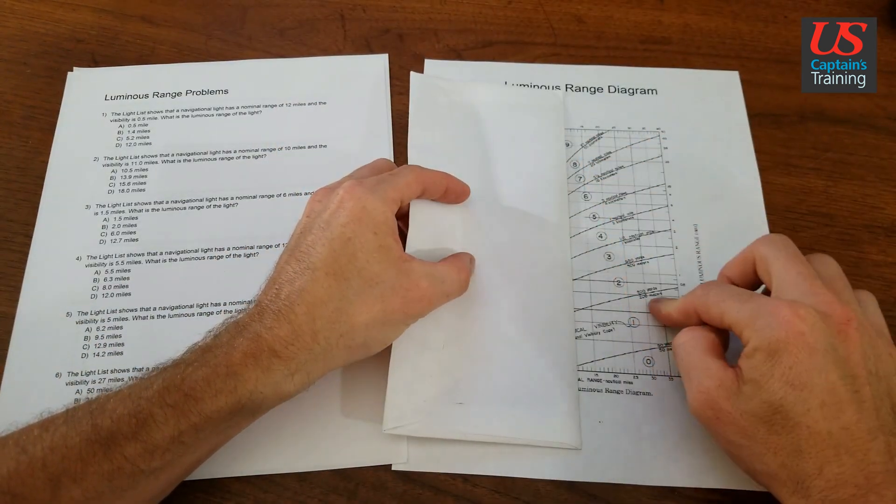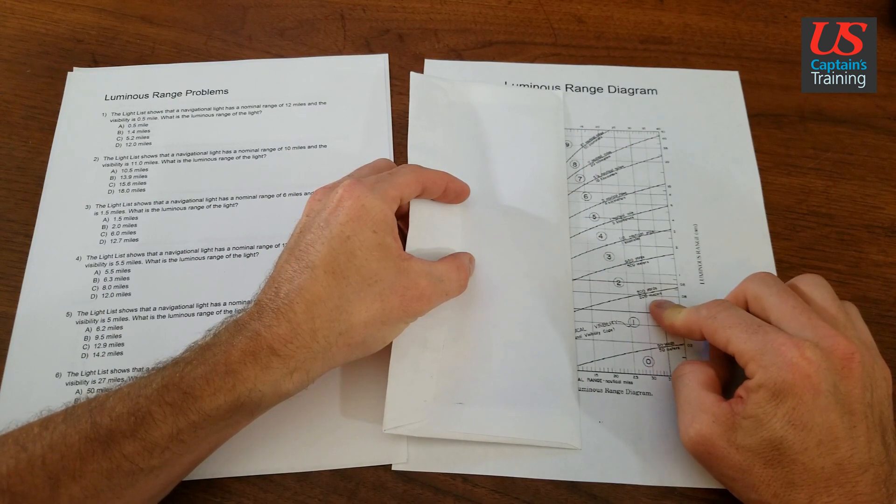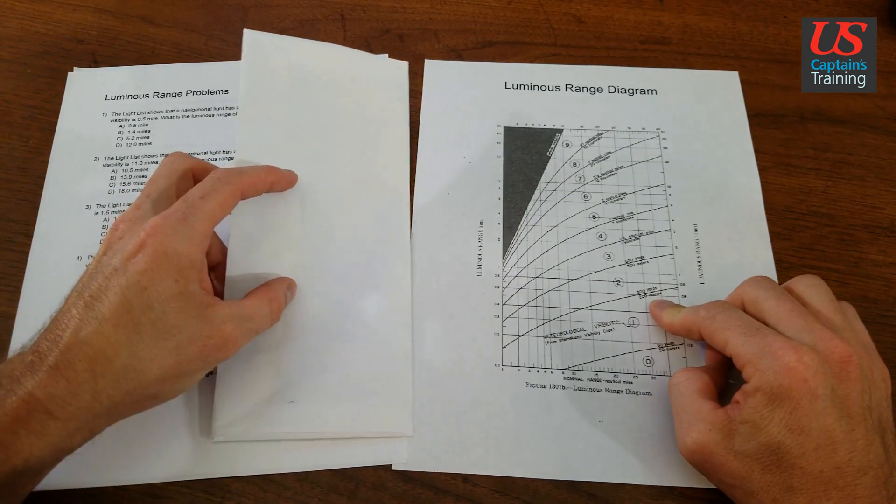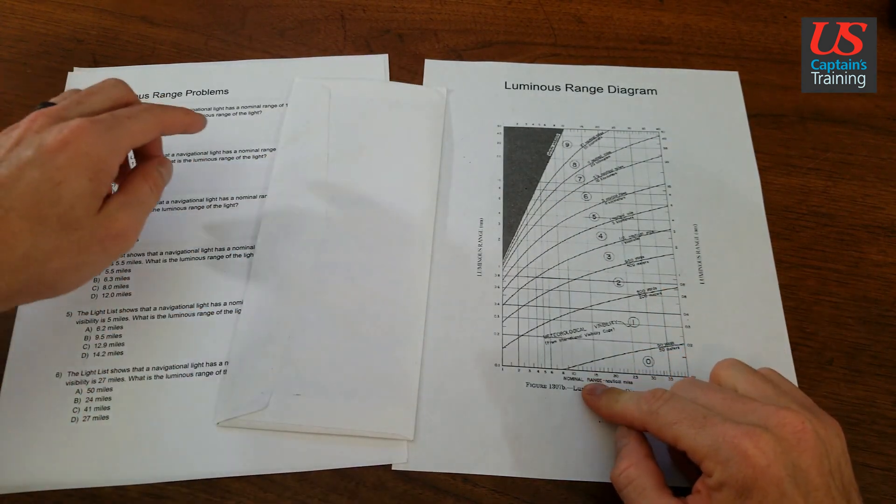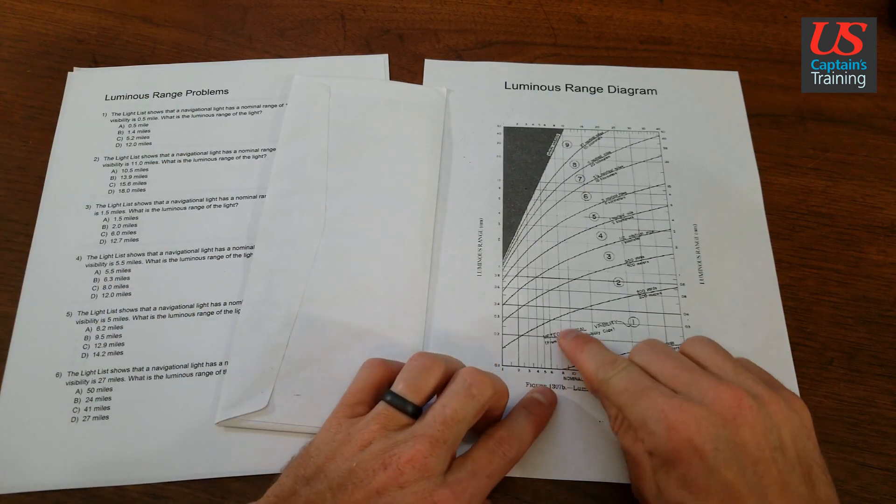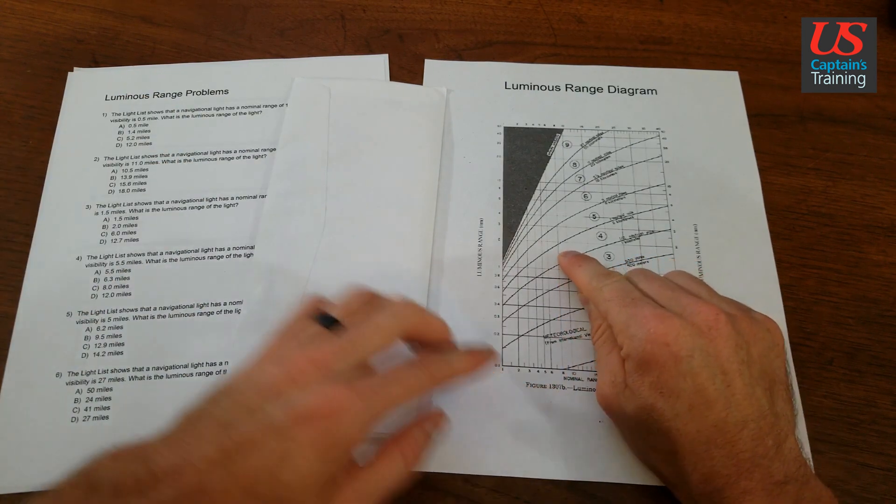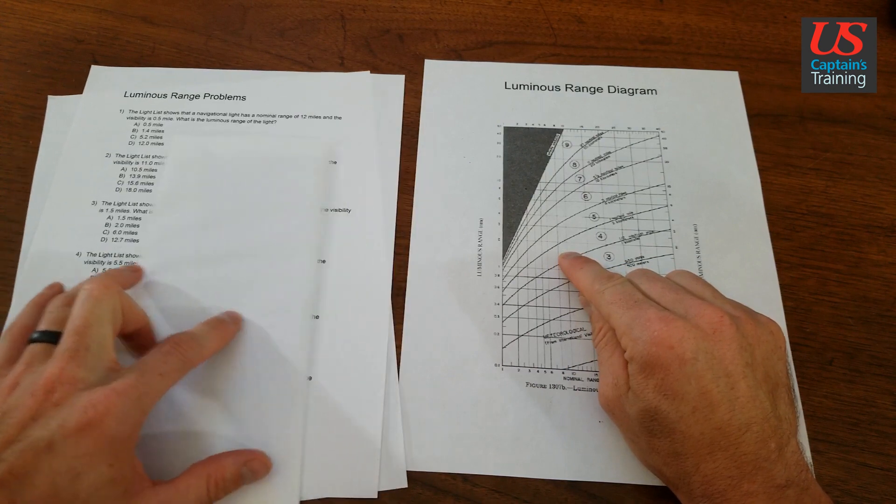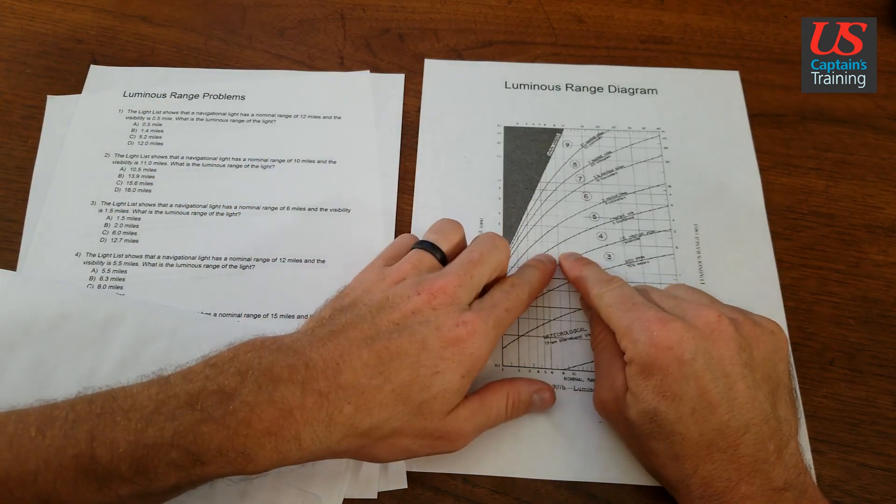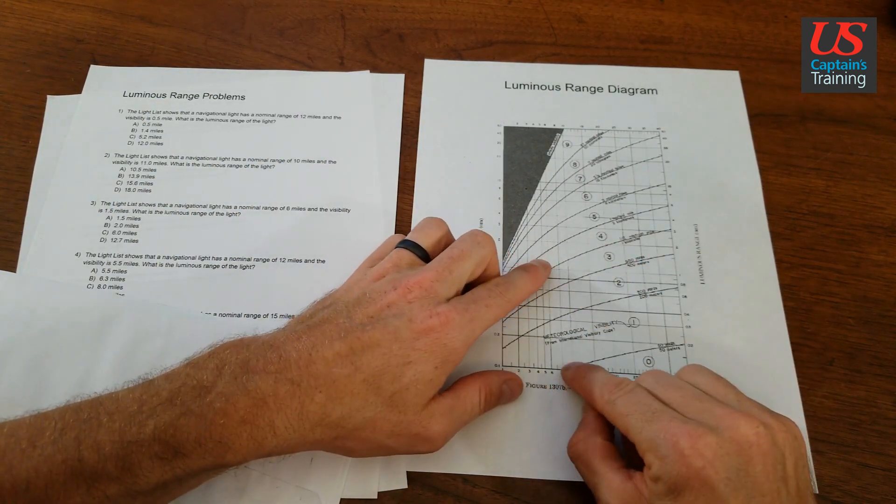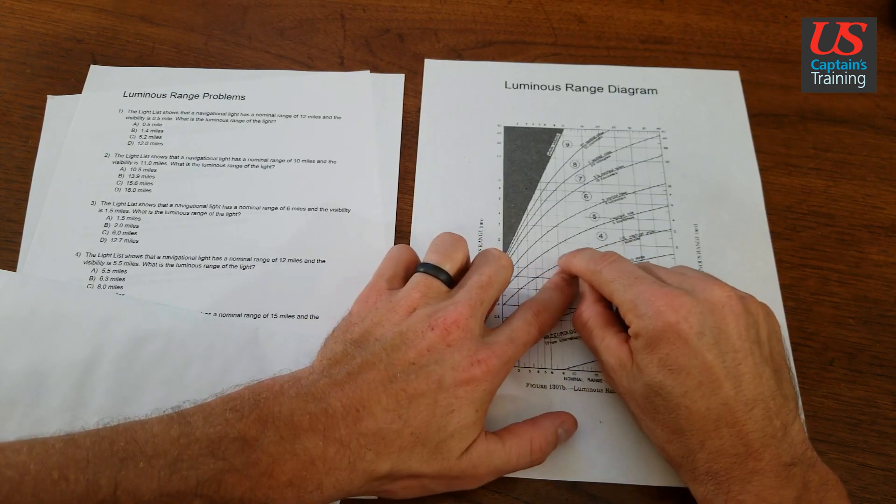So you can see the visibility curves. What you do is take nominal range from the problem, come find it, and follow the nominal range line up until you hit your visibility, which for our example is half a nautical mile. So follow nominal range up until you hit the curve.